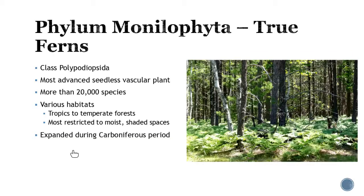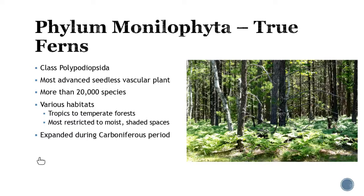The one you're probably more familiar with is phylum Monilophyta — the true ferns, class Polypodiopsida. These are your most advanced seedless vascular plants, and ferns are great examples to use for your plant scavenger hunt. There are about 20,000 species, with various habitats — you'll find them from the tropics to the temperate forest. They love shady spaces, and the diversity of this group really expanded in the Carboniferous period.